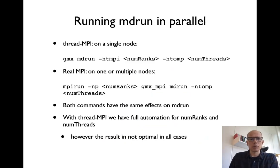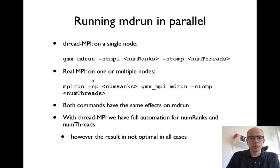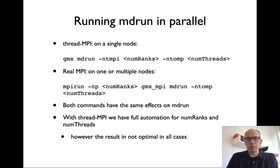In practice, with thread MPI running on a single node, you run 'gmx mdrun' and can set the number of MPI ranks with '-ntmpi' and the number of OpenMP threads with '-ntomp'. You can also give no options at all and GROMACS will automatically choose something reasonable. For real MPI you must use an MPI launcher like 'mpirun', typically with a binary called 'gmx_mpi', and explicitly give the number of ranks. Internally the algorithms are the same; the difference is threads versus processes.